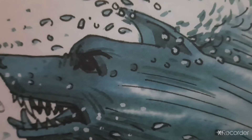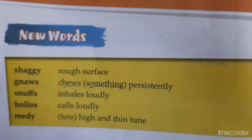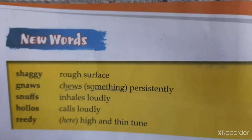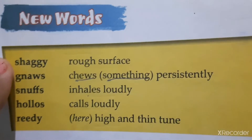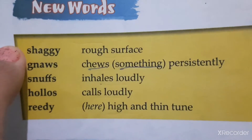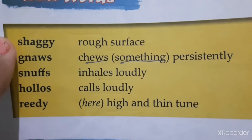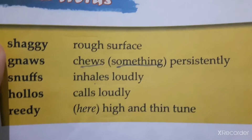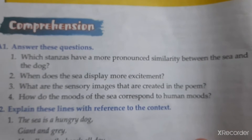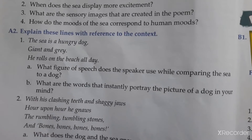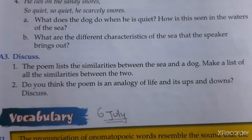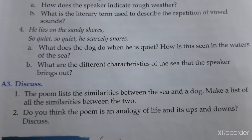This poem is written by James Reeves. Just go on with these new words. This is the comprehension check — if you have understood the poem completely, then you must go on with this. Question answers A1 and A2 are reference to the context. These are some of the discussed questions that you can do.